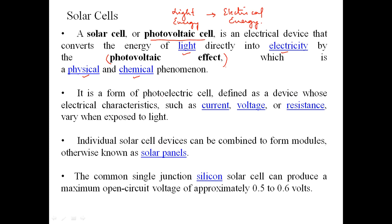A solar cell is a form of photoelectric cell, defined as a device whose electrical characteristics — such as current, voltage, or resistance — vary when exposed to light. It is similar to that of a photodiode. Individual solar cell devices can be combined to form modules, otherwise known as solar panels, which look like thin wafers and are almost transparent.